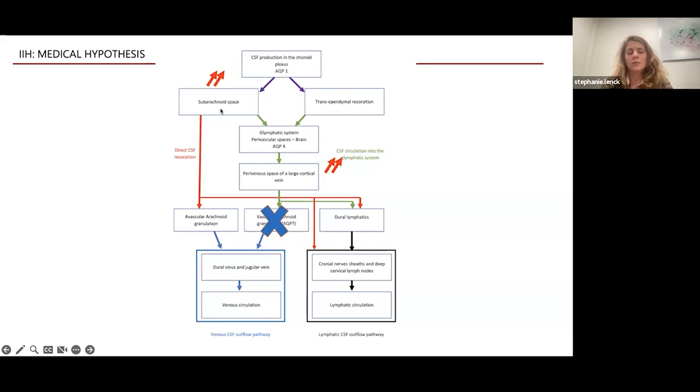You have an increase of CSF in the subarachnoid space in the brain. And after that, you have the formation of the dural venous stenosis here.